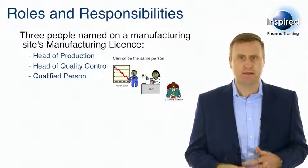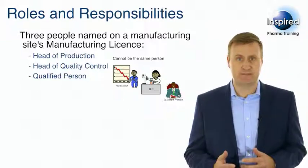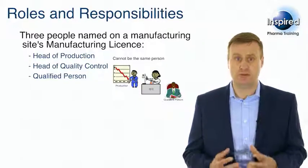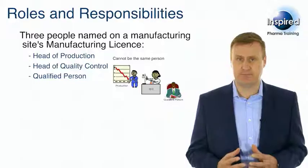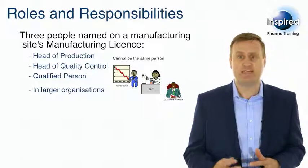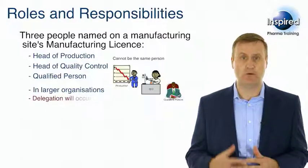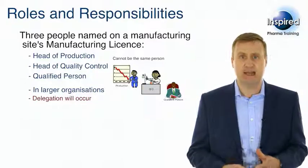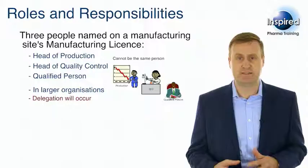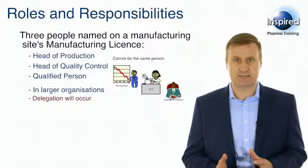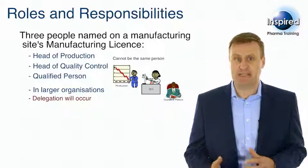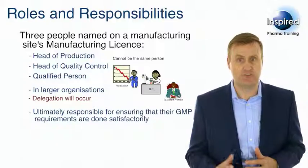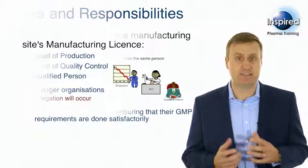Within GMP, the duties of all these individuals are described. In small organisations, it may well be that these people actually do all of these tasks themselves. But in larger organisations, an increasing amount of delegation will occur. This is permitted by GMP Clause 2.2 and 2.3 as long as the delegation is to suitably competent and qualified individuals. However, even if this delegation does take place, these three individuals are always ultimately responsible for ensuring that their GMP requirements are done satisfactorily.